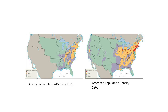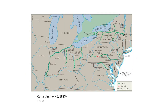A canal is essentially a man-made river that joins bodies of water. The Erie Canal, for example, joins the Hudson River in New York to the Great Lakes. You could then ship goods from Cincinnati — a big meat processing area — all the way to New York City, and it was way faster than before.